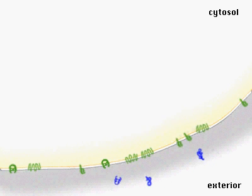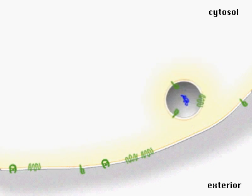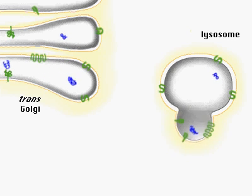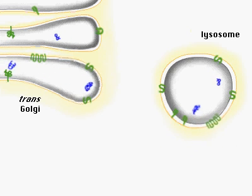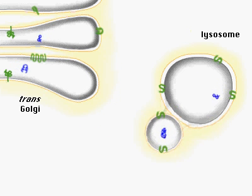Soluble proteins on the outside of a cell can reenter by endocytosis and are sorted to lysosomes for degradation. Other proteins, including lysosomal enzymes, sort directly to lysosomes from the trans Golgi.